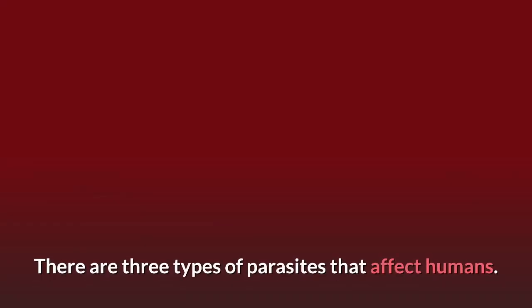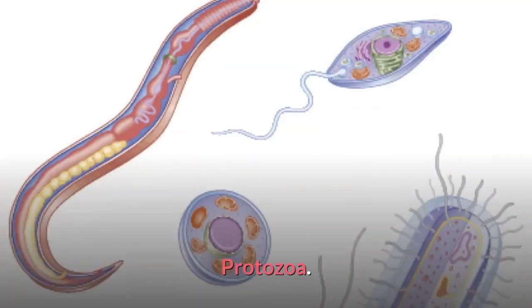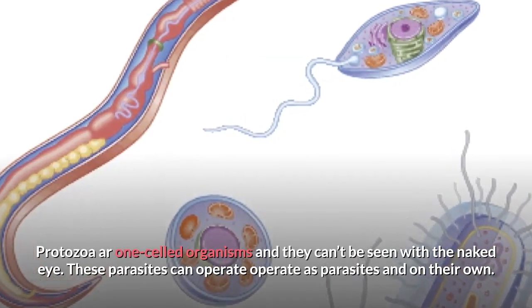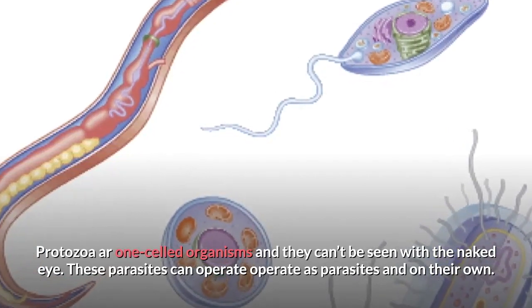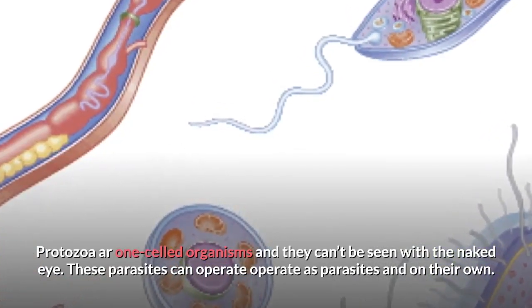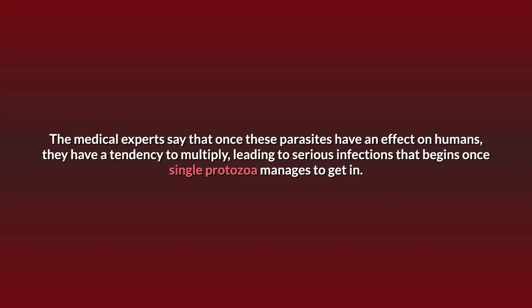There are three types of parasites that affect humans. The first is protozoa. Protozoa are one-celled organisms and they cannot be seen with the naked eye. These parasites can operate as parasites on their own. Medical experts say that once these parasites affect humans, they tend to multiply, leading to serious infections that begin once a single protozoa manages to get in.